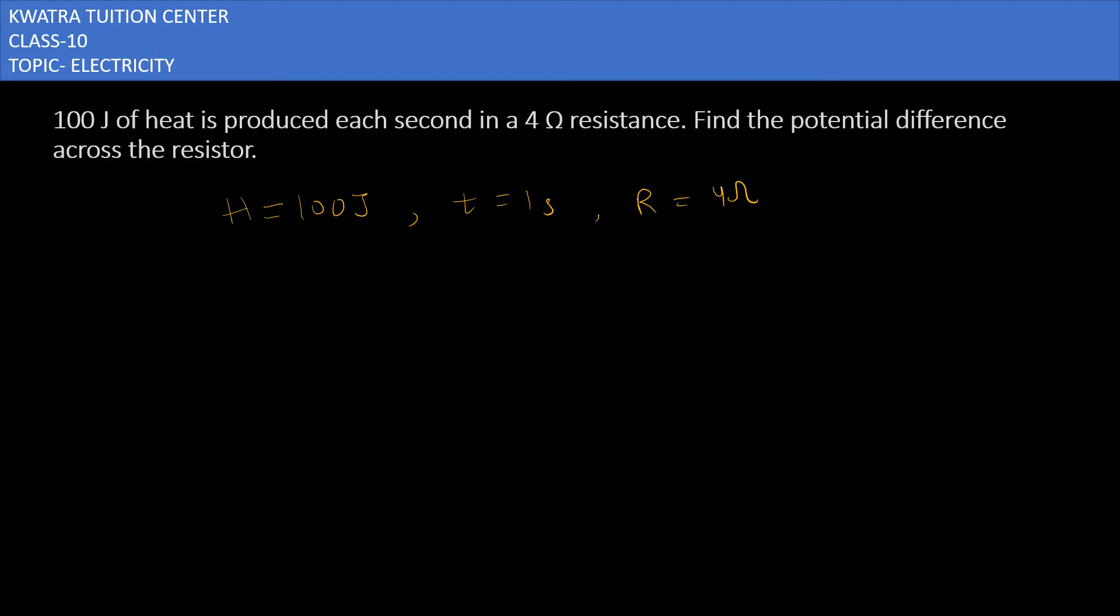So we know that the formula is I²Rt, Joule's law of heat. So what can we find out here? I can find out I. After that, we can remove V's value. That will be a long process. So let's do this.